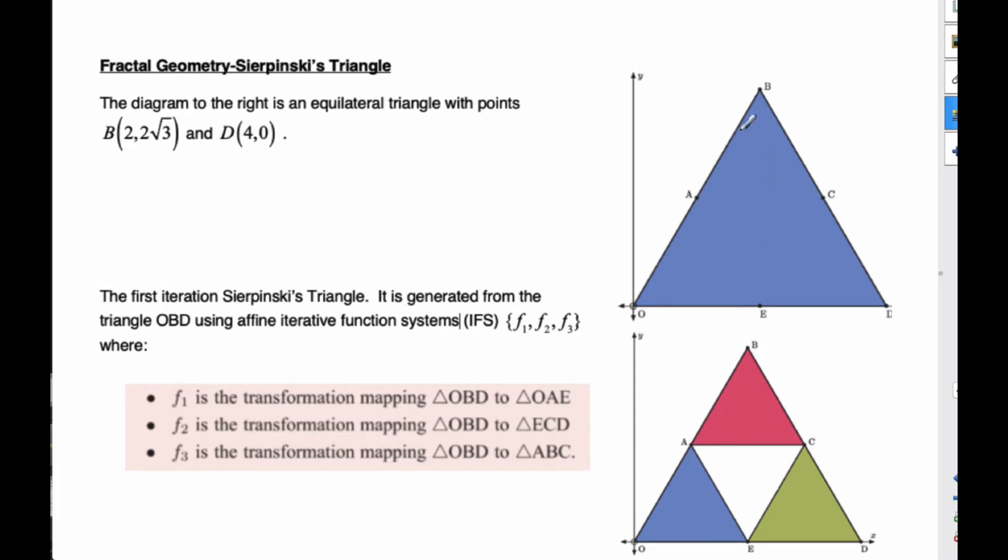This is our initial triangle, and the first iteration of Sierpinski's triangle is generated from triangle OBD using affine iterative function systems, meaning I do the same transformation over and over and over again. What happens is F1 takes the whole big triangle and maps it onto the little triangle here, down here. To do it, it shrinks it down.